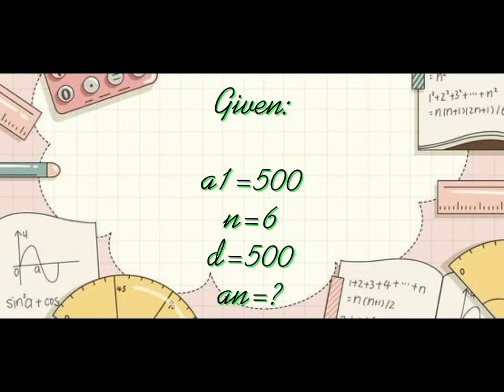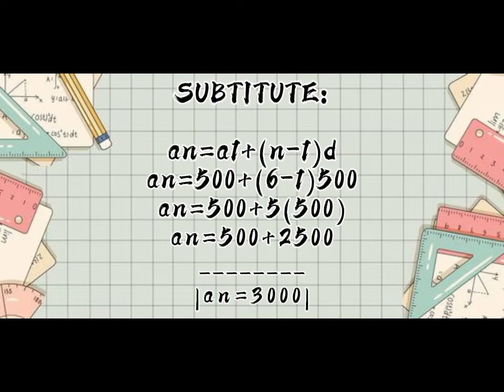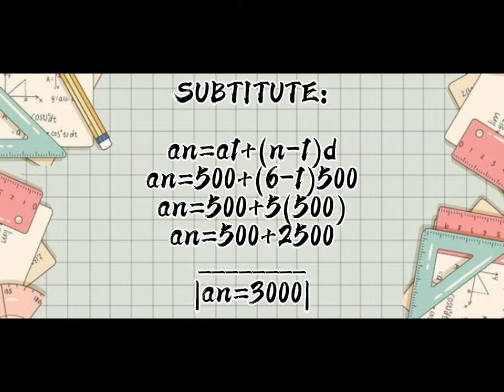A sub N is what we are looking for. So, now you can start to substitute using the formula, A sub N equals A sub 1 plus open parenthesis N minus 1 close parenthesis times D.